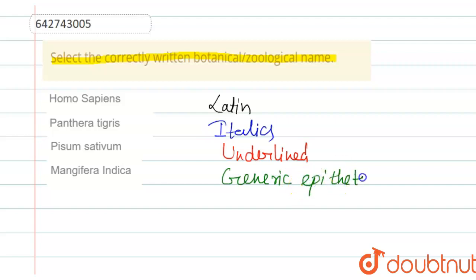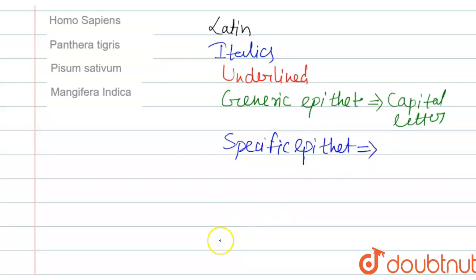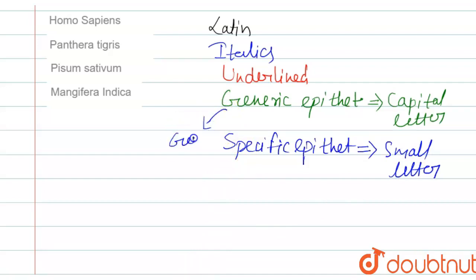The scientific name should be underlined. There is one more thing: the generic epithet, referred to as the genus of that specimen whether it is plants or animals. This generic epithet should have its first letter in capital. The second part is the species-specific epithet, which refers to the species of that organism, and its first letter should start with a small letter.